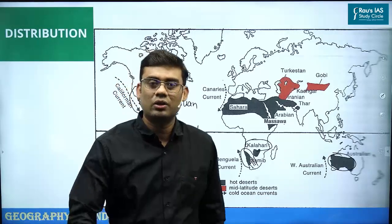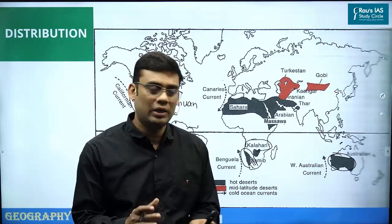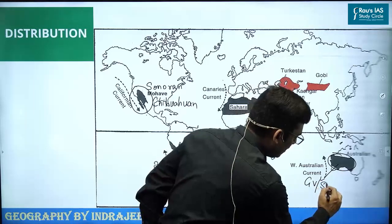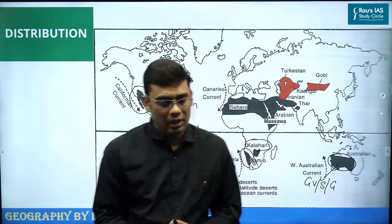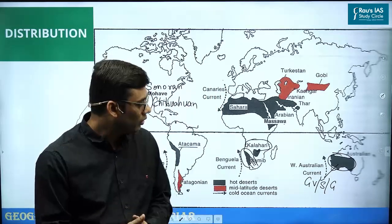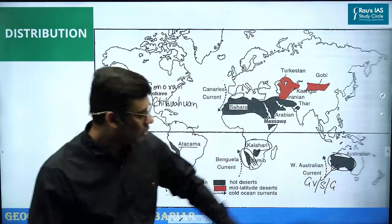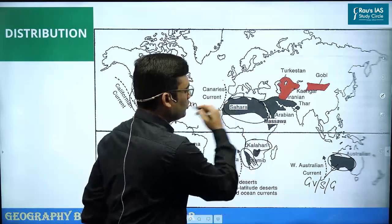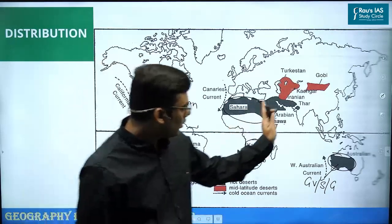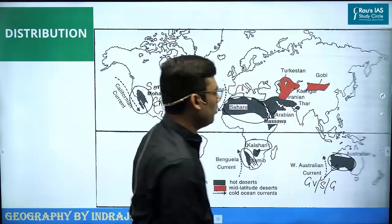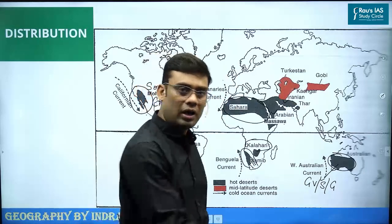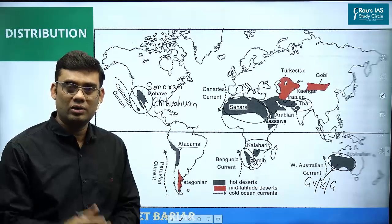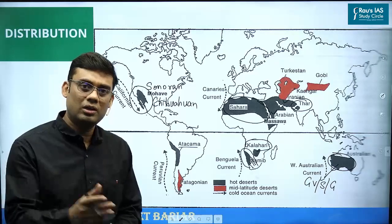Along the western coastal part, we find the Great Australian Desert, which is a collection of a number of deserts including the Great Victoria Desert, Simpson Desert, Gibson Desert, Tanami Desert, and Great Sandy Desert. In the northern part of Africa, the largest hot desert is the Sahara Desert. Further eastward, the Arabian Desert, Iranian Desert, and in the Indian subcontinent the Thar Desert are found.